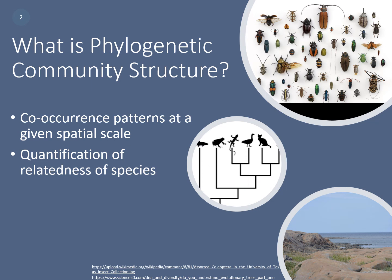Let's start with the question: what is phylogenetic community structure? Phylogenetic community structure investigates co-occurrence patterns at a given spatial scale. It is the quantification of the relatedness of species — basically, it looks at whether closely related species are located in the same habitat or in a different habitat.